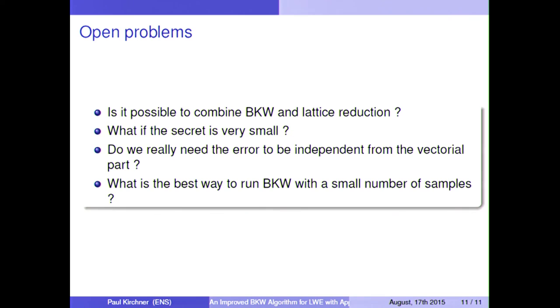And finally, a problem which is related to the previous one. It's what's the best way to run BKW with a very small number of samples. We know that taking linear combinations works, but at least for now, we need to take a quite large linear combination. And this means that the noise we have in our samples will be very large. And we know in practice it works with much smaller noise. So it would be great to prove things with much smaller noise.